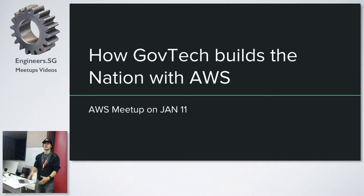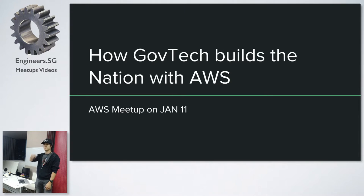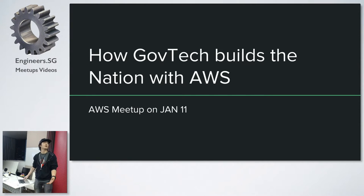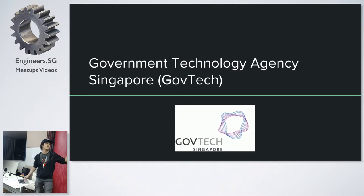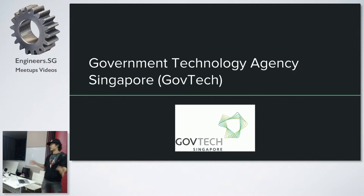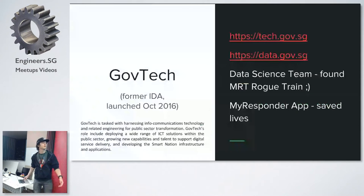It's my first time at this meetup, so kind of new to everyone. Today I'm going to talk about how GovTech builds the nation with AWS. I'm not as technical as the rest of them because I'm supposed to be vendor agnostic. First, a little promotion — for those who don't know GovTech, the long form is Government Technology Agency of Singapore. If you shorten it to GTA, that's a totally different acronym, so we don't want that — that's why GovTech.